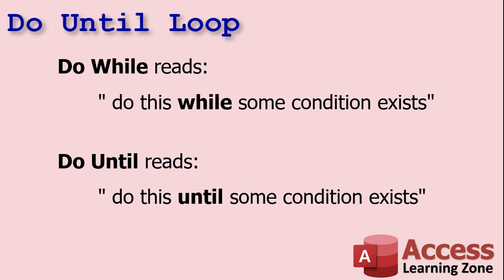Yesterday we looked at the do while loop — a do while loop basically reads: do this while some condition exists. Do until is basically the opposite of that: it says do this until some condition exists. With do while, the condition already exists and you keep running the loop as long as that condition is still in effect. Whereas with do until, the condition doesn't exist and you keep looping until it does. It's a subtle difference, but depending on which one you use it really changes the readability of your code.